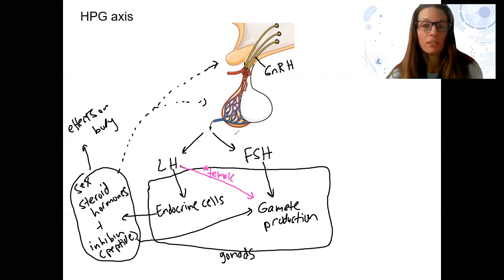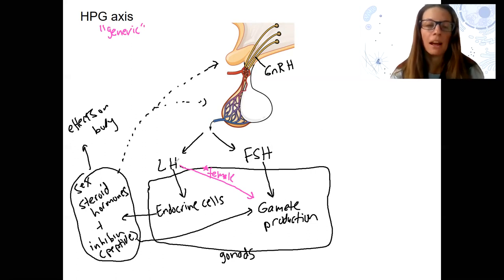Otherwise, this is our generic HPG axis, meaning this applies to males or females. It's the similarities between the two. We'll break apart each one and look at each separately, but then come back to this because what we'll look at separately will fit into this box of follicle-stimulating hormone stimulating gamete production, LH stimulating endocrine cells.